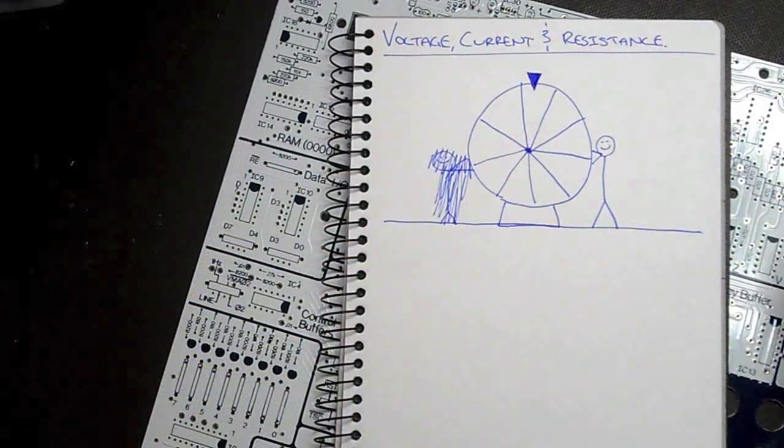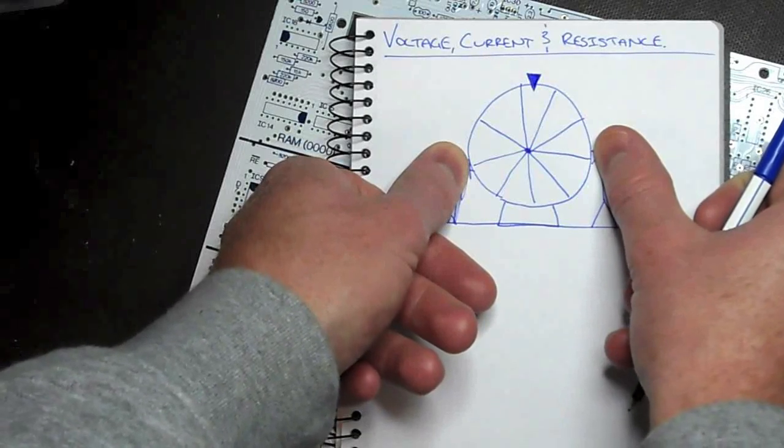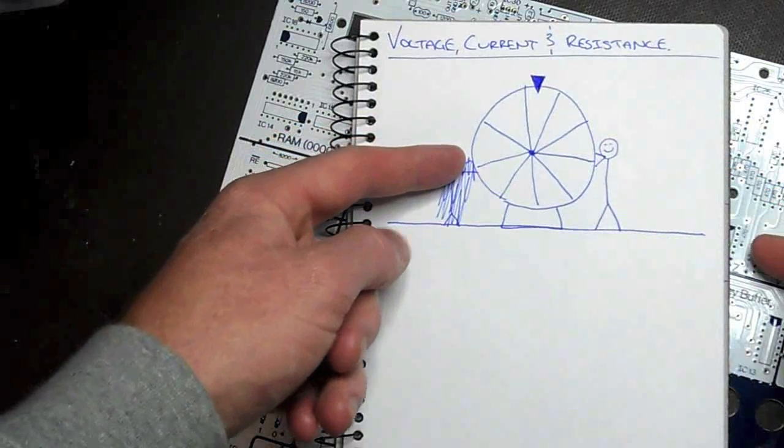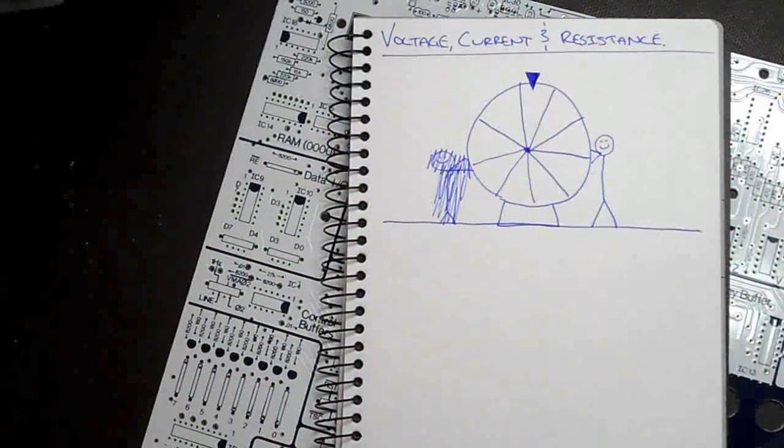Another example of this would be to remove both people. Again, there's no difference in potential. Nobody's trying to push this side, nobody's trying to push this side. So again, we don't get anywhere. Nothing spins, no current flows.